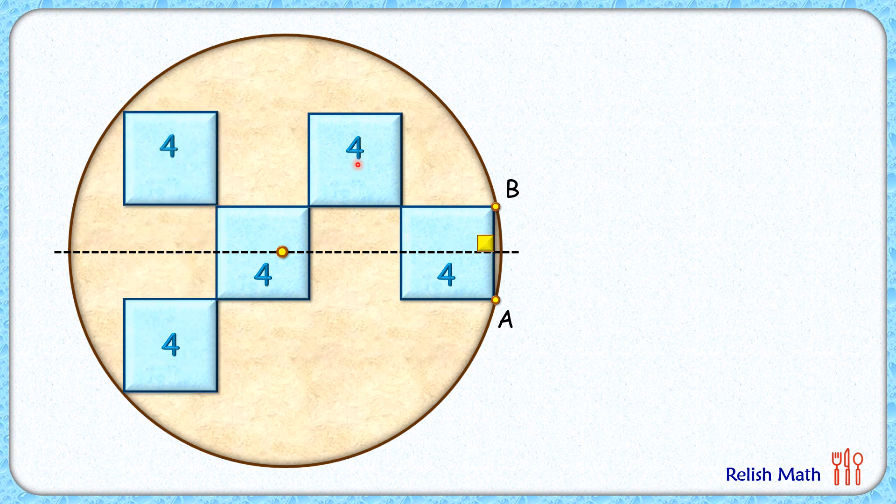Here each square has got area of 4 cm square and thus each side length for this square will be 2 cm.